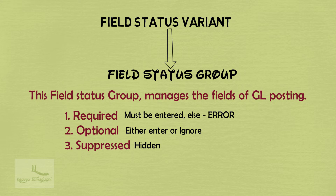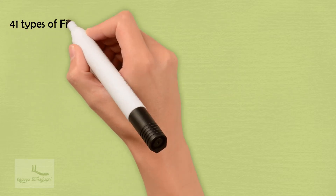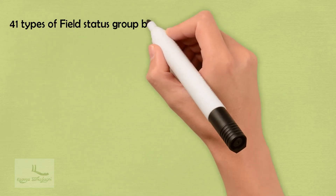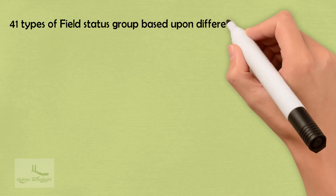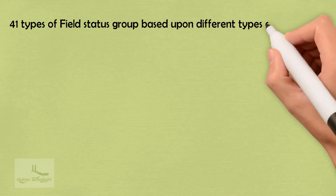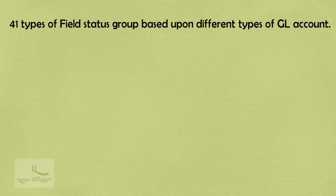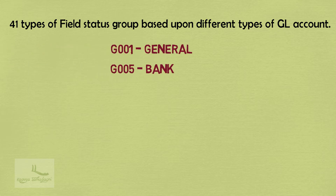It will be hidden for the end user during the GL posting. So it was about the three ways: marking fields as required, optional, or suppressed. The standard SAP has given different types of field status group — a total of 41 types based upon the different types of GL account.